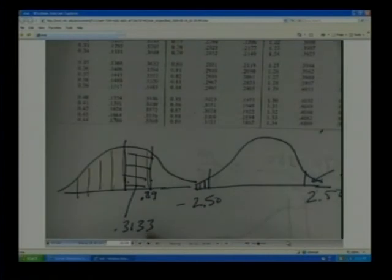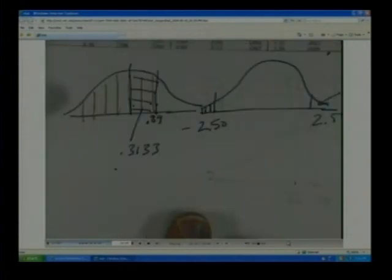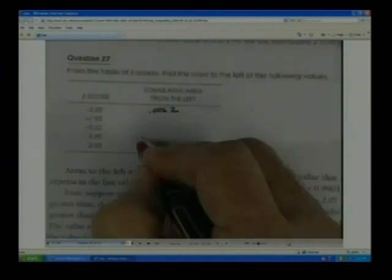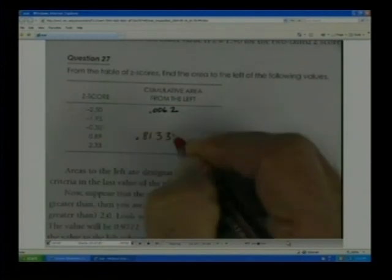So we've got to remember to add our 0.50 there to get 0.8133. So for this particular problem, the answer would be 0.8133, because it would have the area that's all the way back to the left.